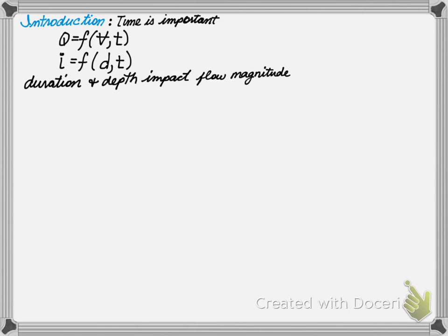So how can we calculate travel time? We will discuss five different methods that can be used to calculate travel time. The first method is called the velocity method.